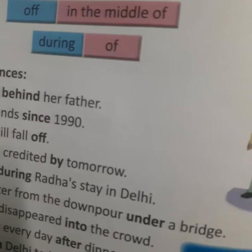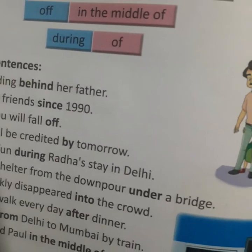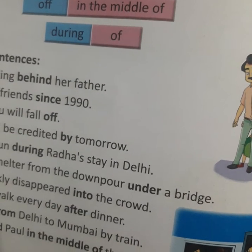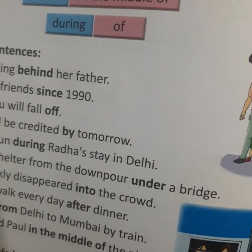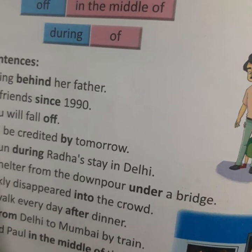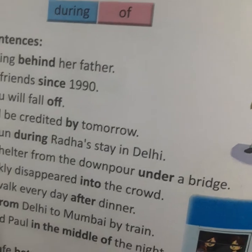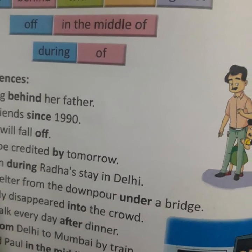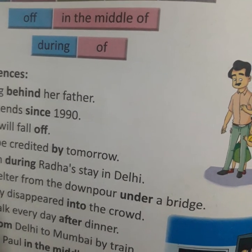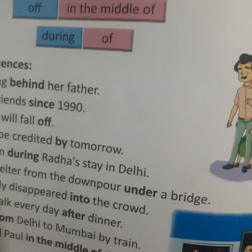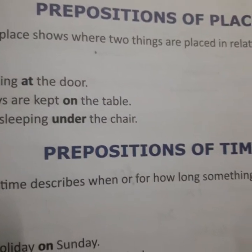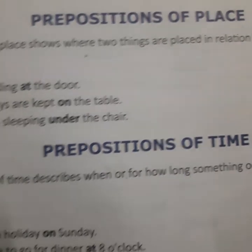So, basically, prepositions are of three types: prepositions of place, prepositions of time, and prepositions of direction. First of all, we will study about prepositions of place.